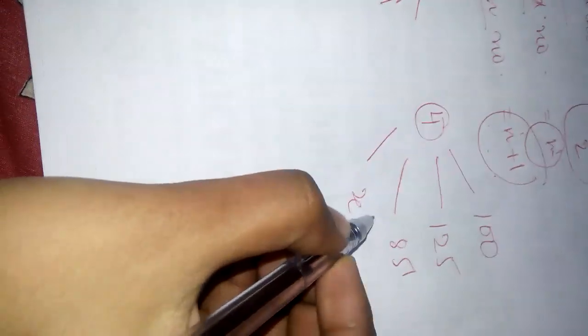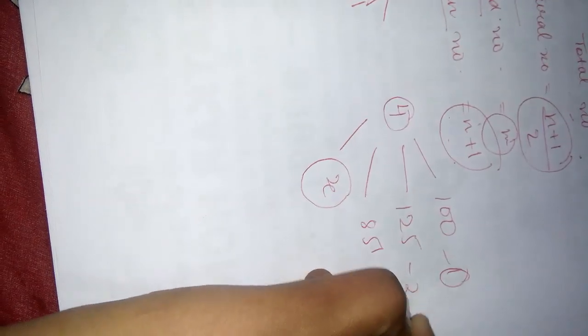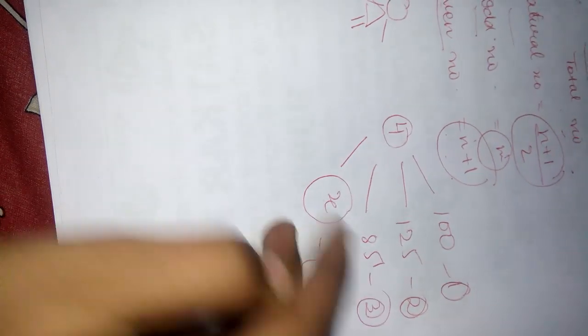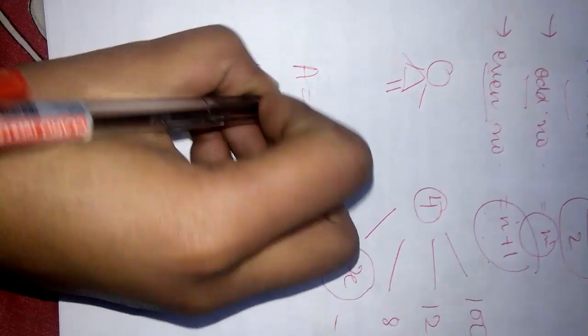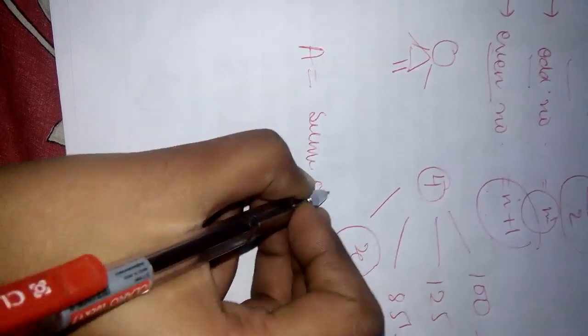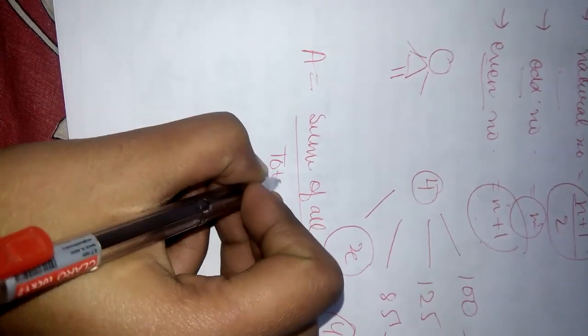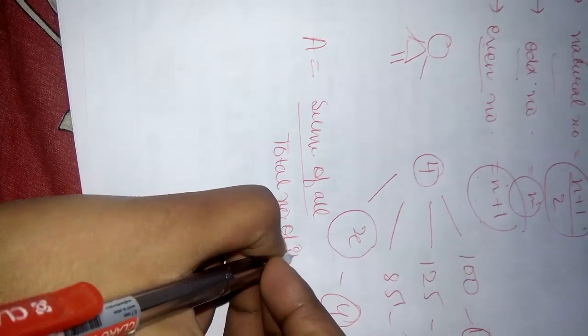So, here I am letting the expense of 4th day be X. It is of 1st day, it is of 2nd day, it is of 3rd day and letting the 4th day expenses X. Okay, average ka formula hoota hai, sum of all upon total number of items.